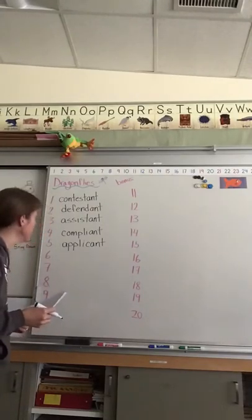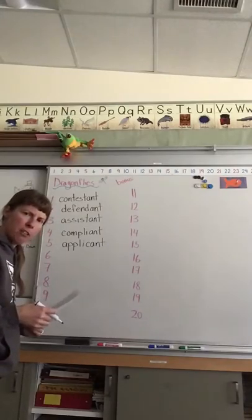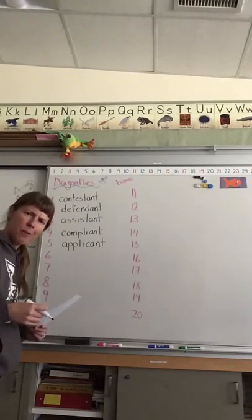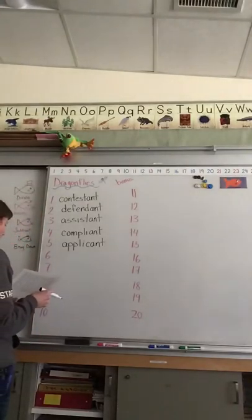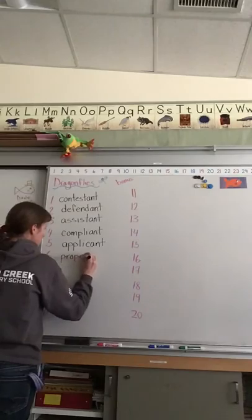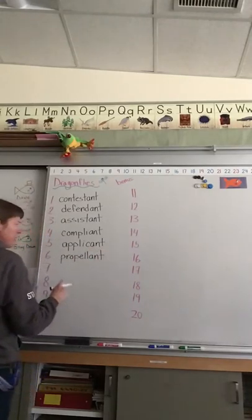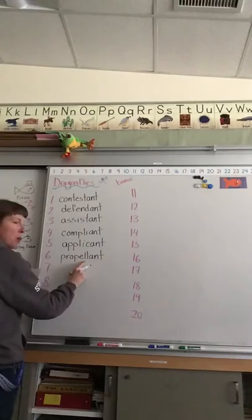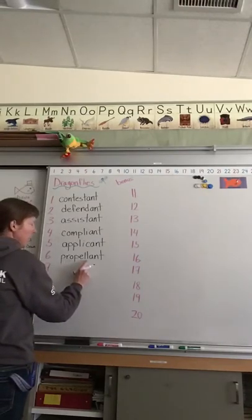Number five, applicant. Okay, don't write this part down. You might apply for a job and then that would make you the person applying for the job or the applicant. So we change the Y to an I, apply, and add C-A-N-T. So the applicant, the person who is applying for the job. The person.